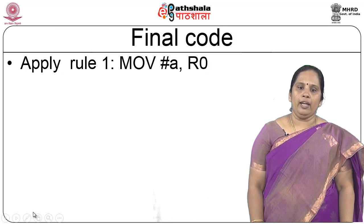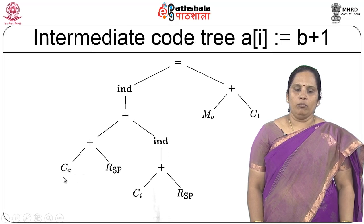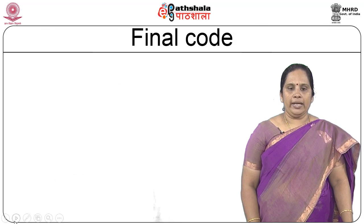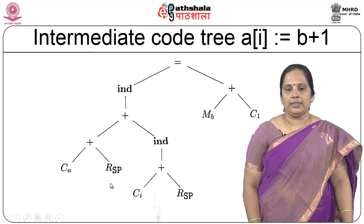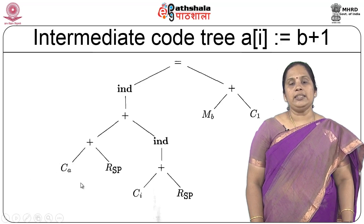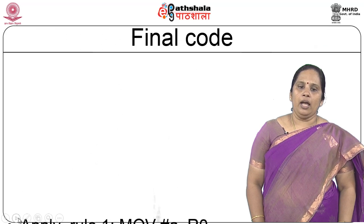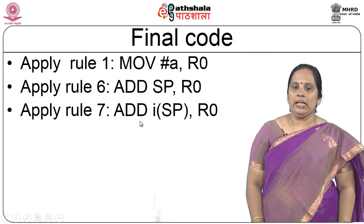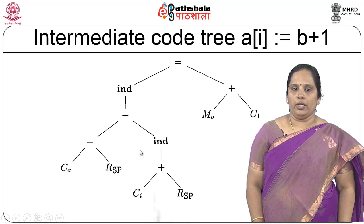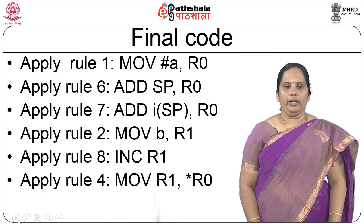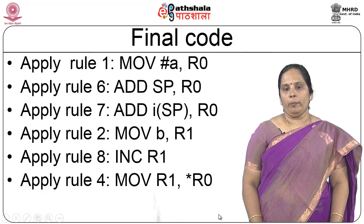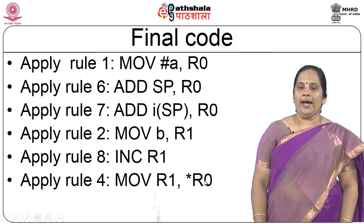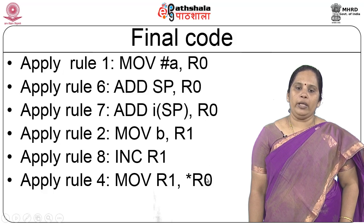Applying rule 1: move A to R0. Then apply rule 6: add stack pointer, R0 — adding the stack pointer register with the contents now in a register. Then apply rule 7: indexed using i. For the right side, apply rule 2: move b into R1, increment R1. The root is an assignment operator, where LHS R0 is indexed, so move R1 into *R0.